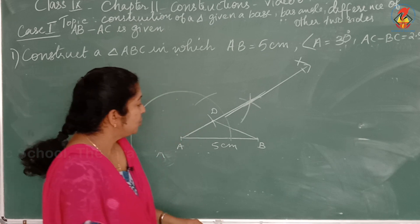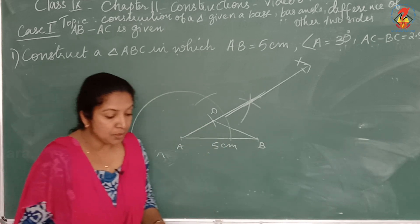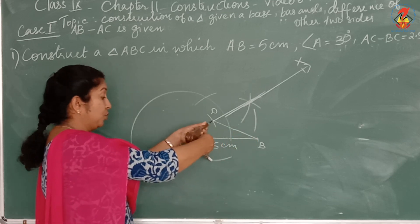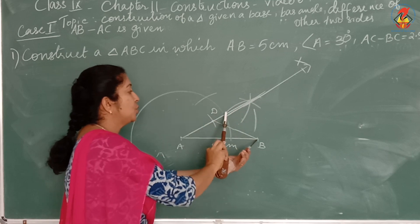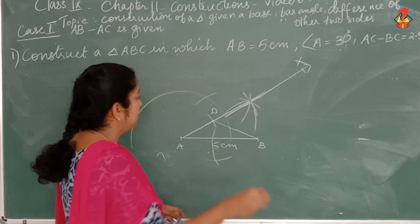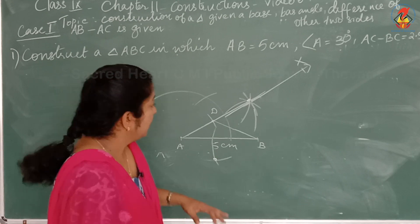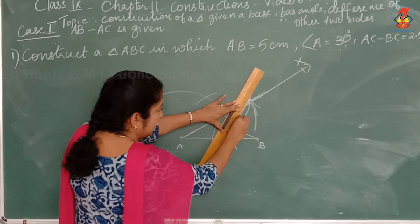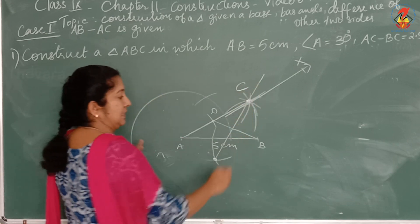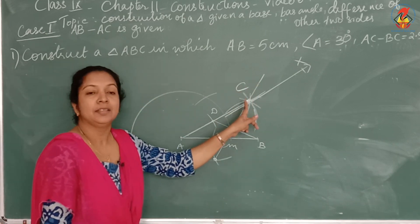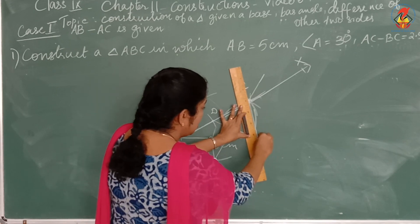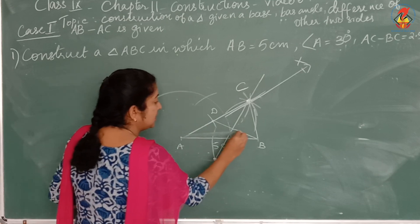Next, take the perpendicular bisector of BD. Take more than half of BD, draw two arcs from D and two arcs from B. Mark the two intersection points and draw the perpendicular bisector. This perpendicular bisector touches the ray AX at a point, which we mark as C.